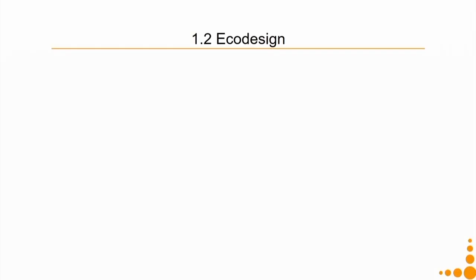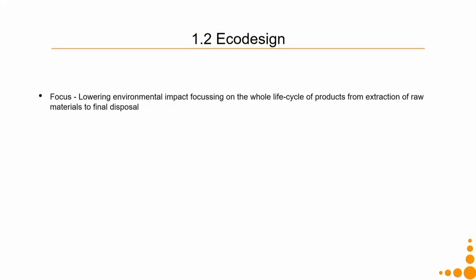The second approach at the product innovation level is eco design. Many people confuse green design and eco design, but they are different. In green design we focus mostly on the product itself, whereas in eco design we consider the whole life cycle of the product. Eco design focuses on lowering environmental impact across the entire life cycle, from extraction of raw materials to final disposal, so the consumption side also comes into picture. Life cycle analysis gives a bigger picture than green design and enables profiling of environmental impact across all life cycle phases.